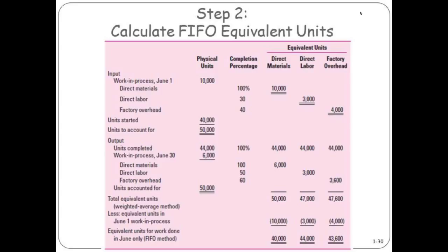Everything else here is the same. Down here, though, we have the total equivalent units we calculated for the weighted average method. We then subtract out the equivalent units — the work that was done in a previous period. That's what's being subtracted out over here, leaving us, for materials, labor, and overhead, the work that was truly done this period. And that's what FIFO does — it's just the work that's done this period and the equivalent units of the work done this period.